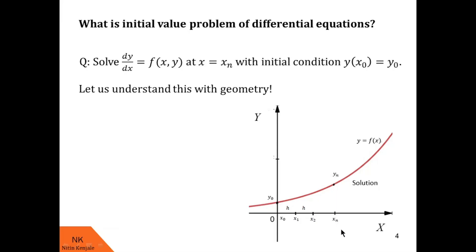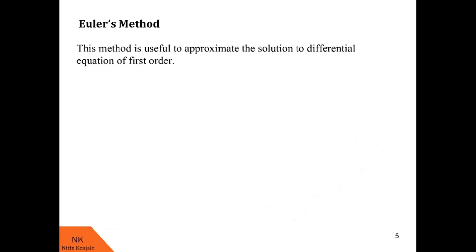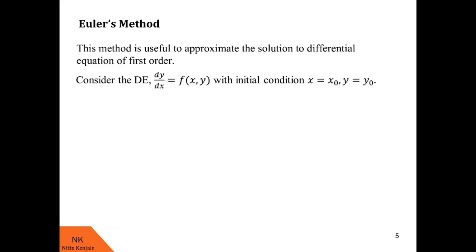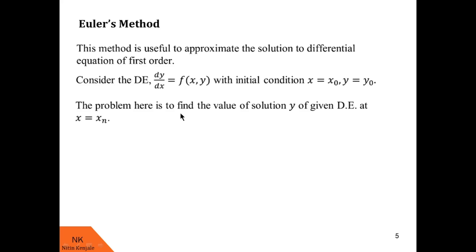Now let us see Euler's method to solve this initial value problem. In this video I am explaining the steps involved in Euler's method — I am not going to explain how these steps were derived. Consider a differential equation dy/dx = f(x, y) with initial condition x = x0 and y = y0. The problem is to find the value of the solution y at the point x = xn.